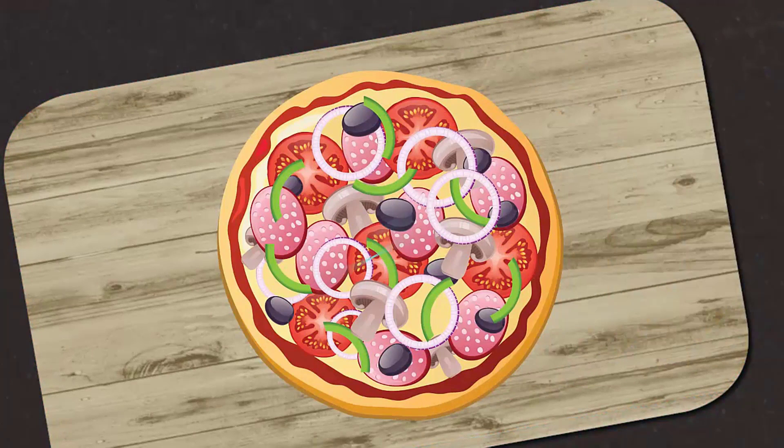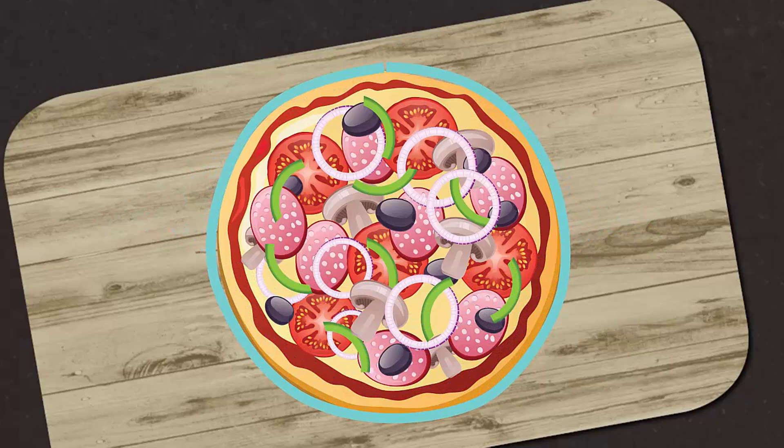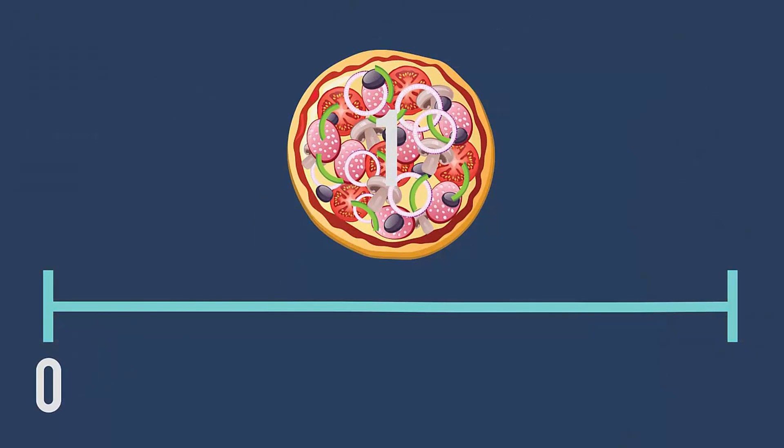To help us visualize this, we are going to use a line and wrap it around this whole pizza. If I stretch it back out, we can see that it is like a number line. We have a 0 on the left and a 1 on the right. We have one whole pizza.